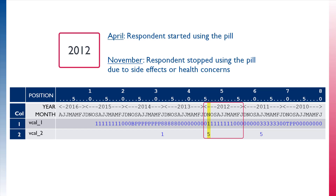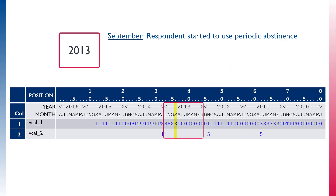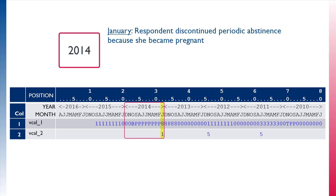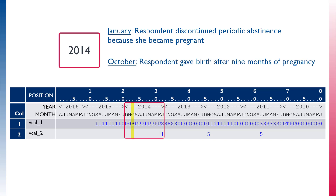In April 2012 the respondent started using the pill, and in November the respondent stopped using the pill due to health concerns or side effects. In 2013 the respondent started using periodic abstinence, also known as the rhythm method, in September. In January of 2014 the respondent discontinued periodic abstinence because she became pregnant, and in October, after nine months of pregnancy, the respondent gave birth to a child.